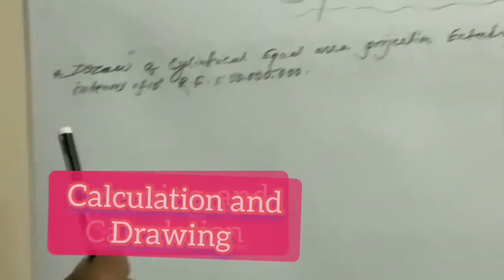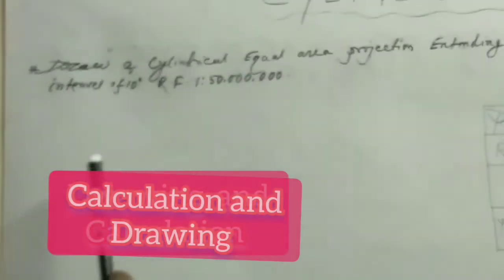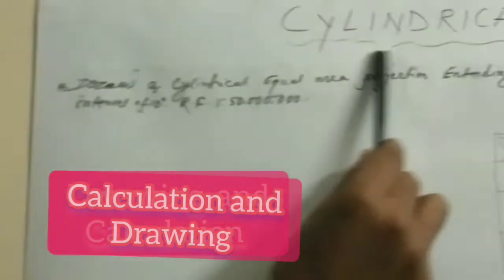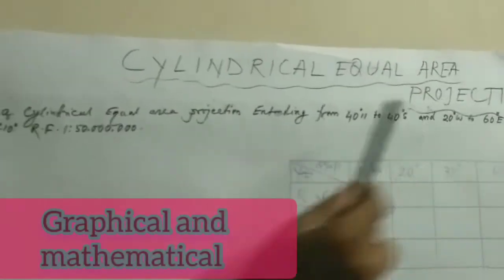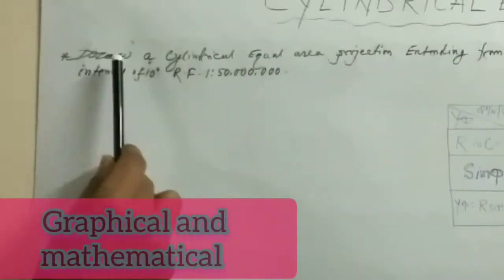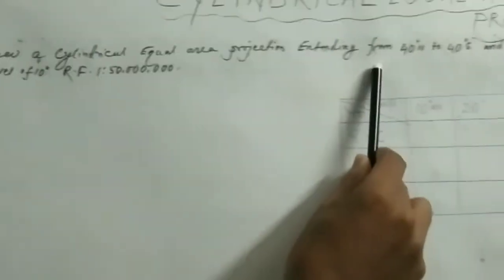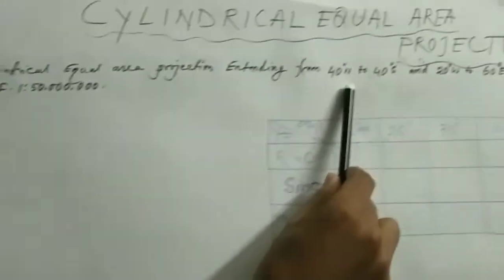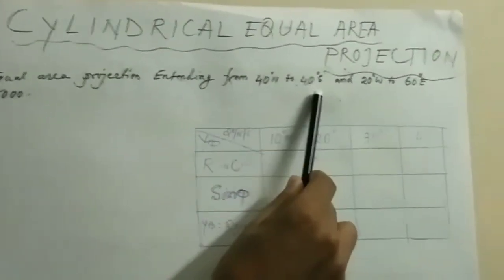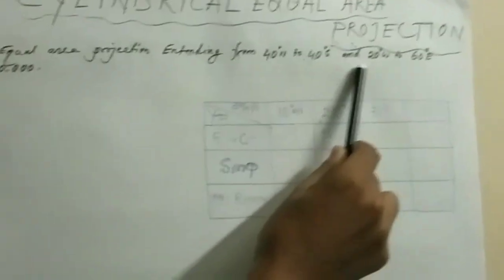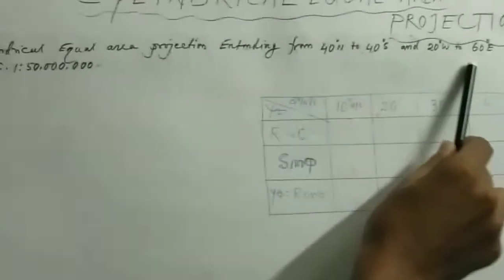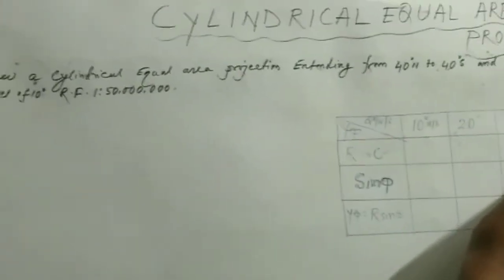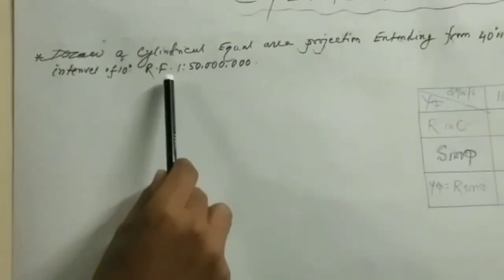Hello guys. I am going to draw a cylindrical equal area projection. The problem: draw a cylindrical equal area projection extending from 40 degrees north to 40 degrees south and 20 degrees west to 60 degrees east, with an interval of 10 degrees.